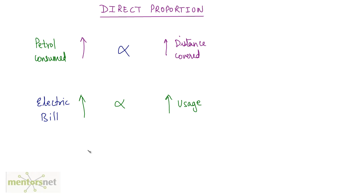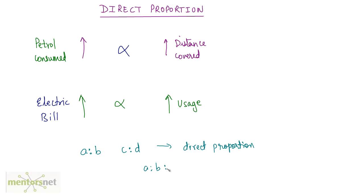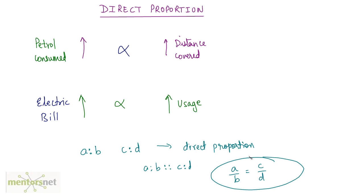Let us assume there are two ratios, A is to B and C is to D. If these ratios are in direct proportion, then we write them as A is to B is proportionate to C is to D, and therefore A by B is equal to C by D. A proportion is nothing but the equality of two ratios. So whenever ratios are in direct proportion, you write them like this.